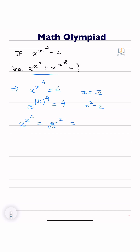Now x to the power x to the power 8: under root 2 to the power under root 2 to the power 8, so under root 2 to the power 16, which is 2 to the power 1/2 into 16, so 2 to the power 8 is equal to 256.